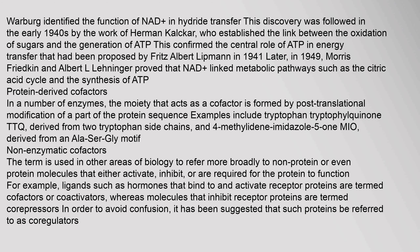Other cofactors were identified throughout the early 20th century, with ATP being isolated in 1929 by Karl Lohmann, and coenzyme A being discovered in 1945 by Fritz Albert Lipmann. In 1936, Otto Heinrich Warburg identified the function of NAD in hydride transfer. This was followed in the early 1940s by the work of Hermann Kalckar, who established the link between the oxidation of sugars and the generation of ATP, confirming the central role of ATP in energy transfer proposed by Lipmann in 1941. Later, in 1949, Morris Friedkin and Albert Lehninger proved that NAD-linked metabolic pathways such as the citric acid cycle were connected to the synthesis of ATP.